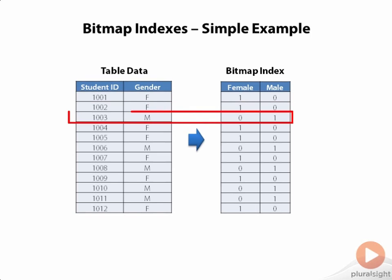Conversely, for student ID 1003, who is a male, the female column is marked as 0, meaning false, and the male column is marked as true. So what we have in our bitmap index is really just a two-dimensional array of bits. Other than the simplicity of this structure, there are a couple of advantages: this structure is very space efficient on its own, and bit arrays like this can be highly compressed, making the structure even more space efficient. Consequently, bitmap indexes don't take up much space on disk, and so they can be read very quickly by Oracle.